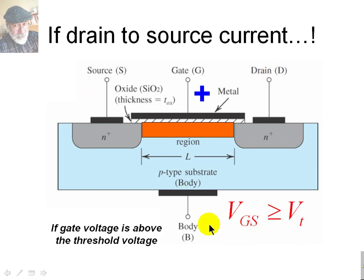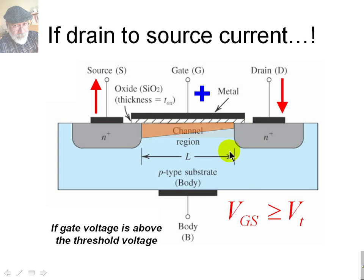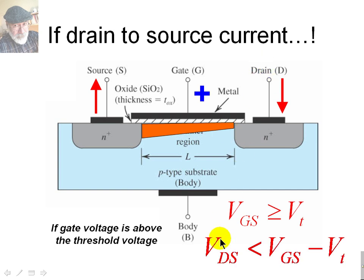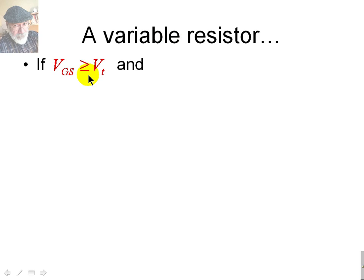Now let's consider we apply that voltage: VGS is above the threshold voltage. There is a channel, and because there is a channel, we pass the current from the drain to the source. That current will produce a voltage gradient across the channel — the same way as in the JFET — and will modulate the width of the channel. If we keep VDS at a reasonable value and below the overdrive voltage, we have a variable resistor between the drain and the source.